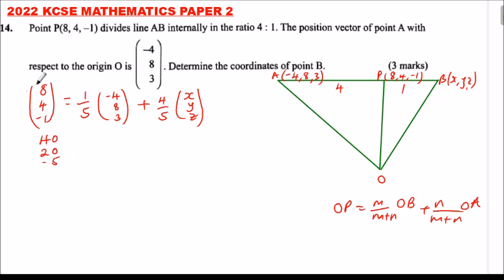We have multiplied by 5. So, that becomes, that is equal, when you multiply this by 5 you get (-4, 8, 3). That is it plus this will be 4(X, Y, Z).